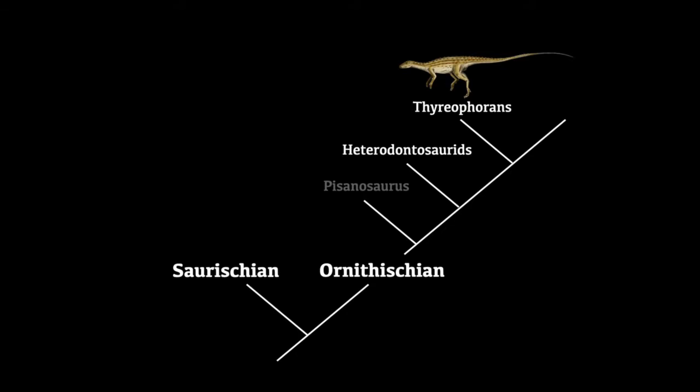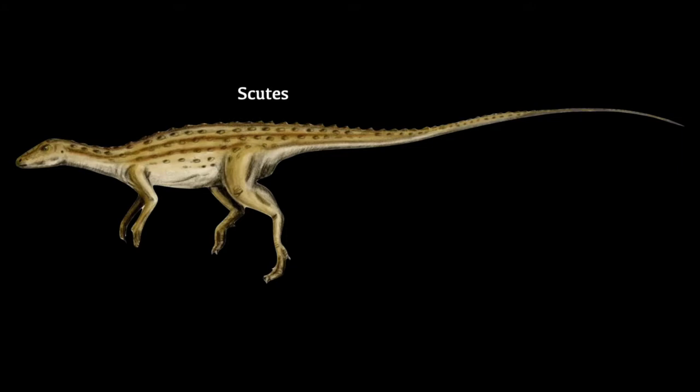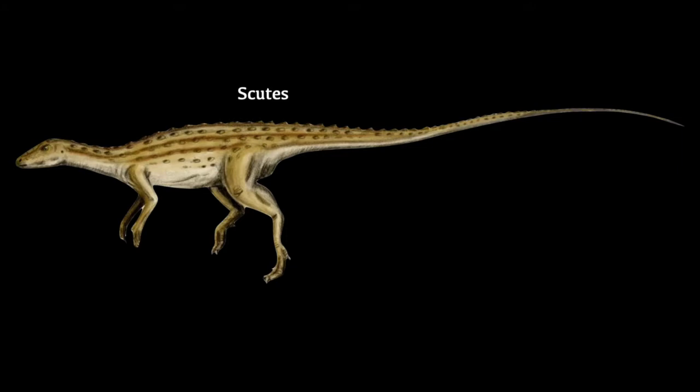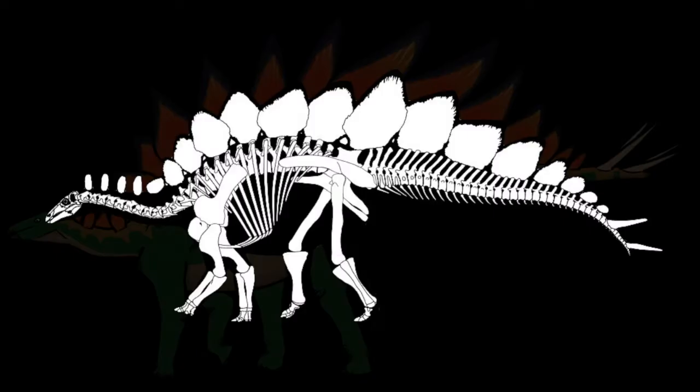The next group to come about were the Thyreophorans. These started looking similar to their common ancestor with heterodontosaurids, but with one important difference. As seen in Scutallosaurus, they had scutes — little knobs of bone that afforded the animals some protection. This was taken to extremes by the later Thyreophorans, the Stegosaurs and the Ankylosaurs.